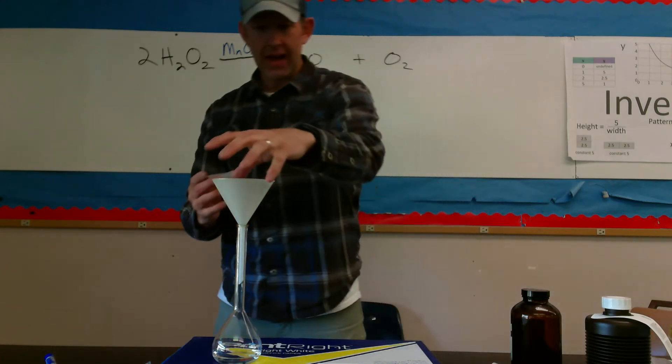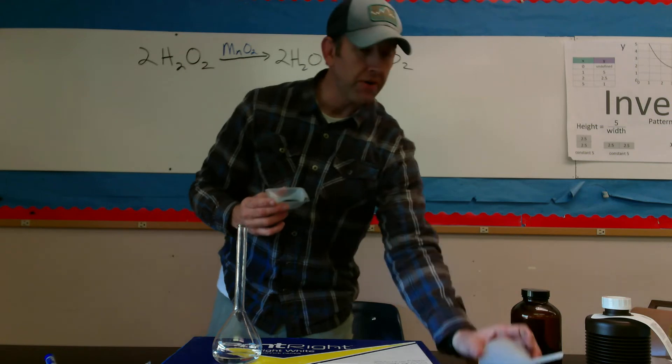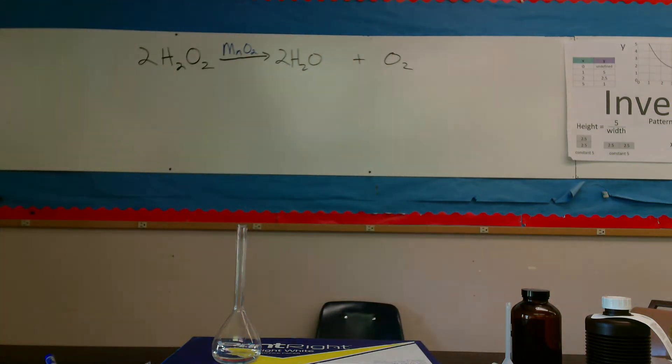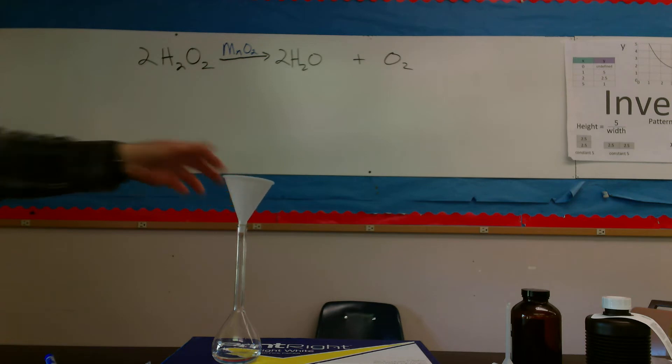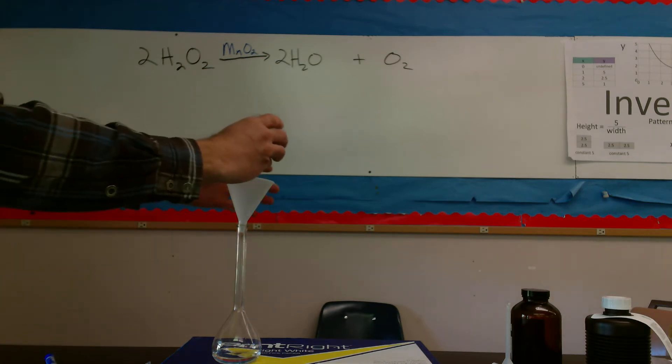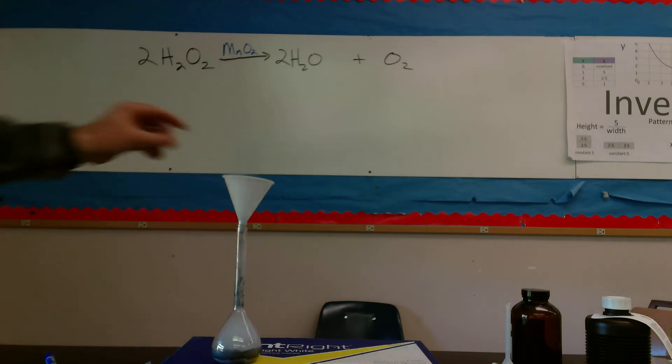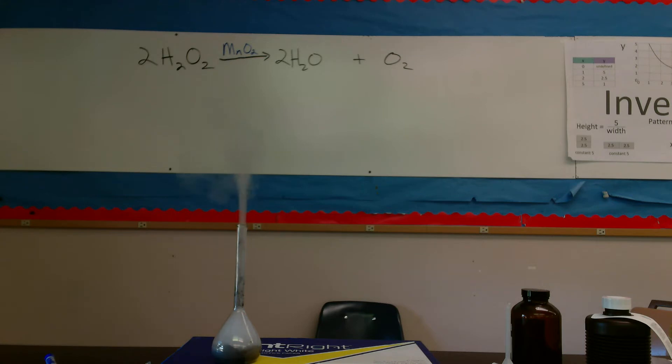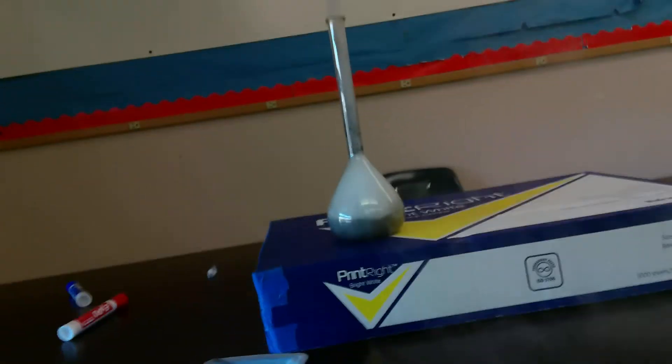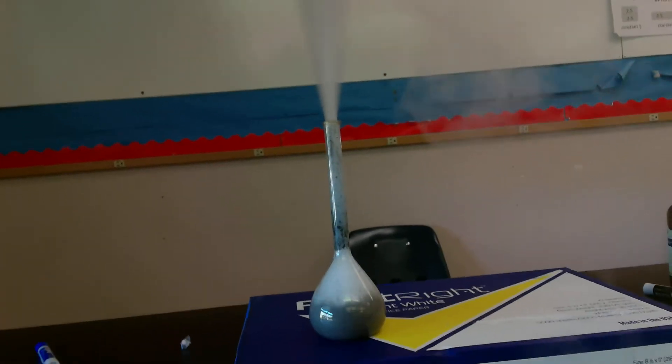Manganese dioxide is just kind of a plain black powder. I'm going to add that using a different funnel to our reaction. What we should see is some bubbles forming. The bubbles forming would be that oxygen gas. We can see this reacting much more quickly than it would otherwise.